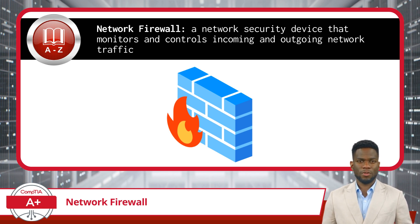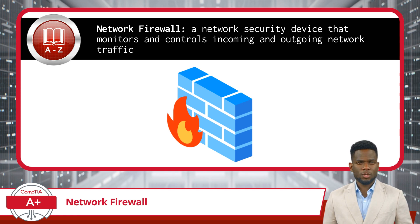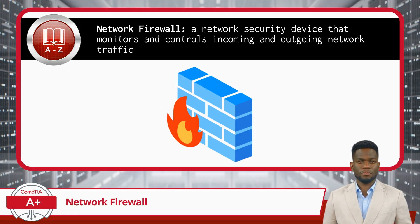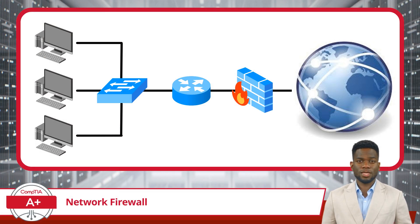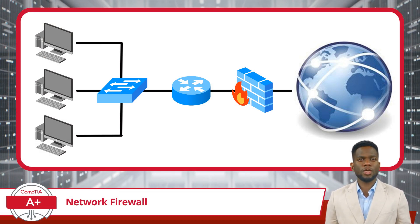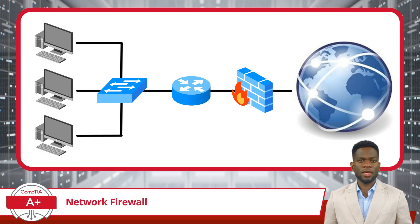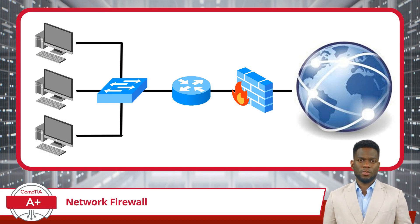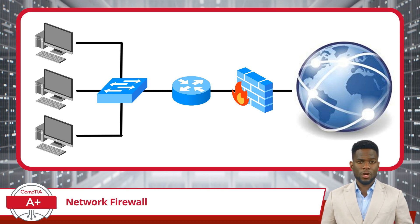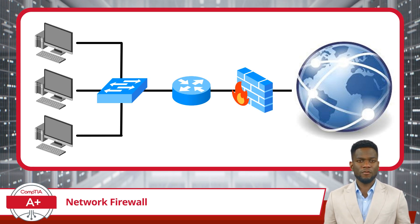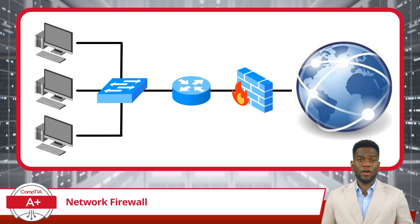A network firewall is a network security device that monitors and controls incoming and outgoing network traffic. How does a network firewall work? It performs a data packet inspection for each packet that tries to pass through it, inspecting its source address, destination address, and content. It then compares this information against a set of predefined security rules and policies.